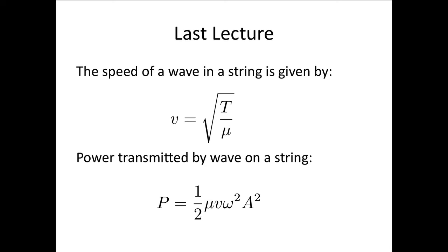After that we showed that the power transmitted by a wave traveling through a string is given by P equals one-half μ, which is the mass per unit length, times v, the wave speed, times ω squared, times the amplitude squared.